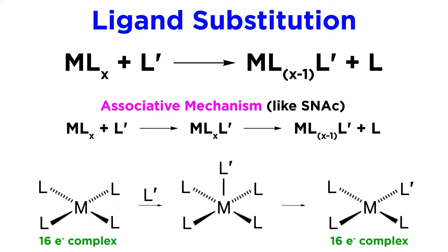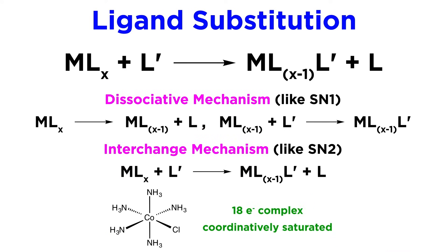The associative process is preferred by 16 electron complexes, as association of another ligand forms an 18 electron complex, which is stable. This is also encouraged by open coordination sites that may be on the metal, such as with square planar complexes that can be attacked from the top or bottom. The dissociative and interchange processes are preferred by 18 electron complexes because the metal is already stable and usually crowded in terms of coordinating ligands, so one ligand must leave to make room for another.